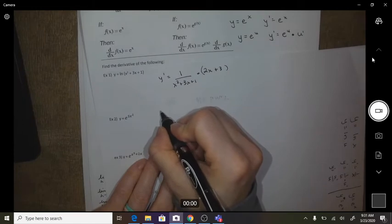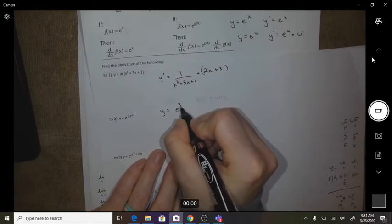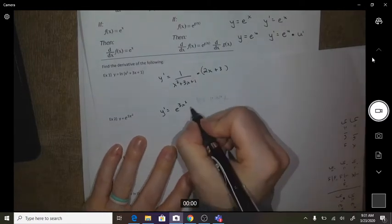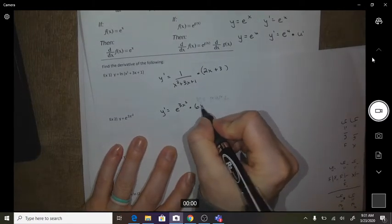Okay, number two, you repeat. So e to the 3x squared, and then we'll stop the times it by the derivative, so 6x.